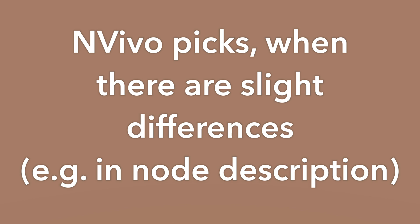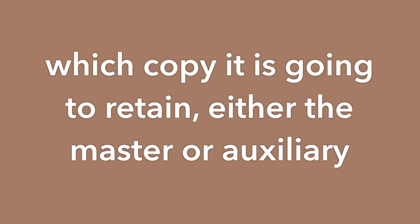For example, if I have my copy of my project and I've made a change to the node description because I needed a note to myself on how I'm supposed to use this node, when I send it back to my NVivo file manager to get merged, that person may open their file and merge my file into it. To be clear: the file that's open and getting merged into we'll call the master file, and the file that is being merged in is the auxiliary file. NVivo picks, when there are slight differences like a node description, which one it's going to retain — the master file or the auxiliary file.